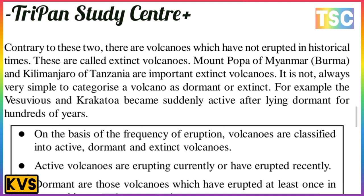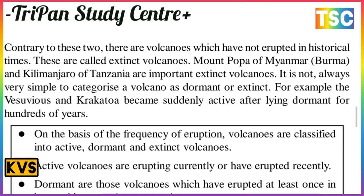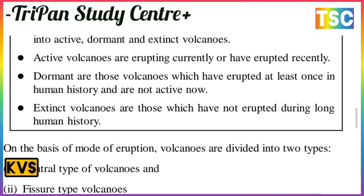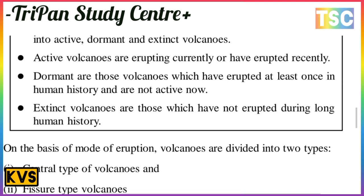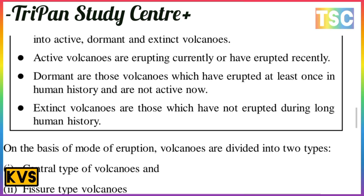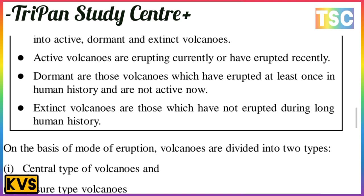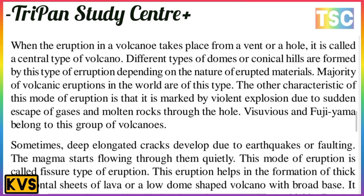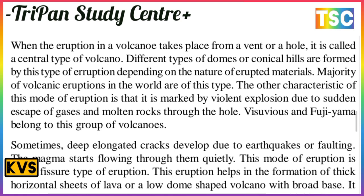On the basis of frequency of eruptions, volcanoes are classified as active, dormant, and extinct. Active volcanoes erupt currently or have erupted recently. Dormant volcanoes have erupted at least once in human history and are not active now. Extinct volcanoes have not erupted during long human history. On the basis of mode of eruptions, volcanoes are divided into two types: central types and fissure types of volcanoes. When eruptions take place from a vent or a hole, it is called a central type of volcano.